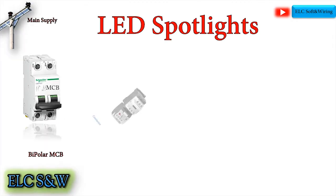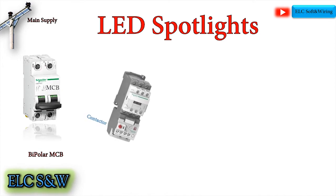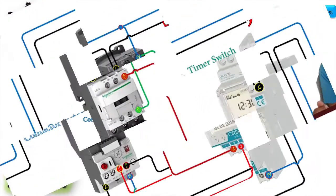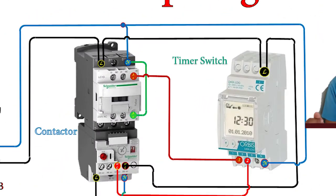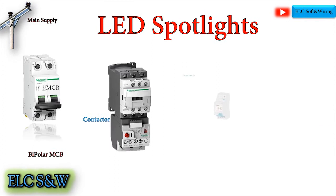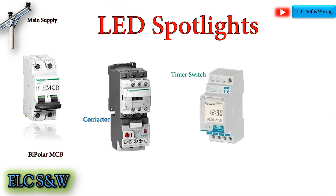Number 2: Contactor. A contactor is an electrical switching device used for switching an electrical circuit on and off. It's a special type of relay. Number 3: Timer Switch. A timer switch is a mechanism that allows you to program the days and times for switching a circuit on and off.